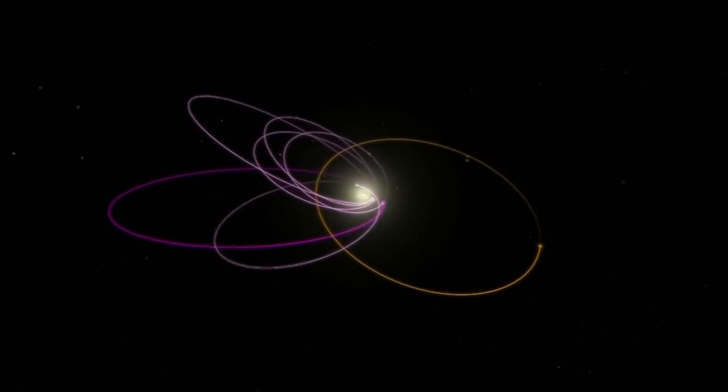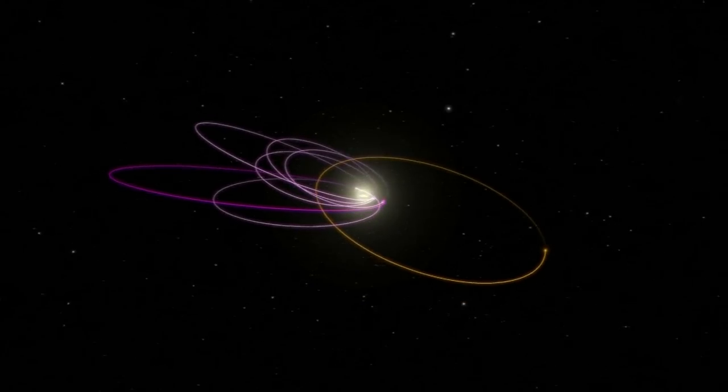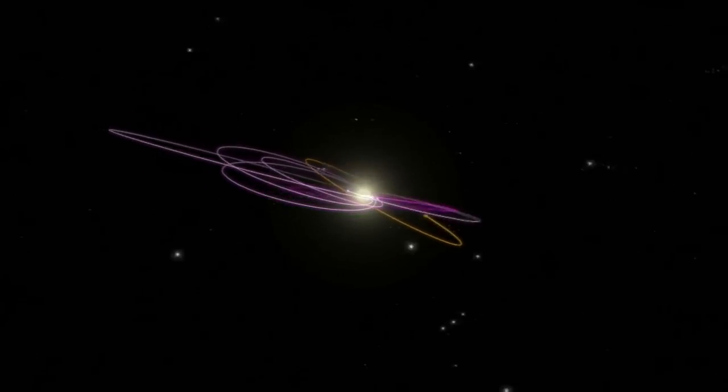Computer simulations show that the mystery planet, if it exists, would orbit about 20 times further away from the Sun than Earth.